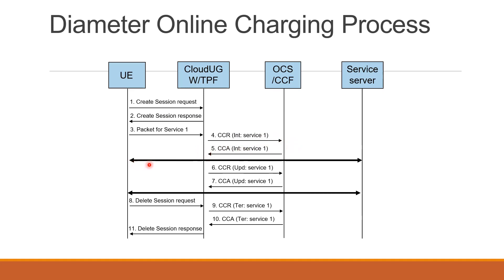Once the user starts browsing — for example, using WhatsApp — the UGW sends an update request specifically mentioning that for WhatsApp, the system is using RG17 or RG18. So it sends an update request saying it needs quota for rating group 18. OCS checks how much quota is available for rating group 18 for this user and assigns a specific predefined quota. The initial communication usually does not involve quota — it is basically to check whether the service is allowed. For quota assignment and updates, that is handled by the update request.